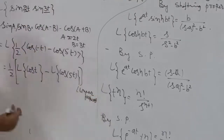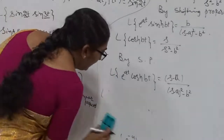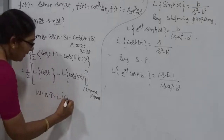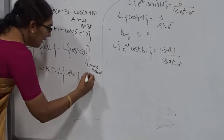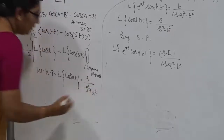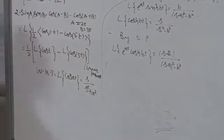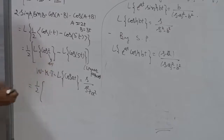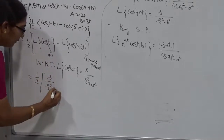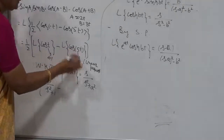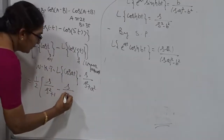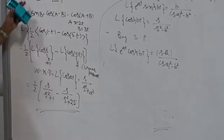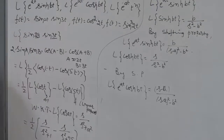By the linear property, we now apply the standard formula: the Laplace Transform of cos At is s divided by s squared plus A squared. In the first term, A is 1, so we get s divided by s squared plus 1. In the second term, A is 5, so we get s divided by s squared plus 25. Therefore, the Laplace Transform of sin 2t into sin 3t is one-half times [s/(s squared plus 1) minus s/(s squared plus 25)].